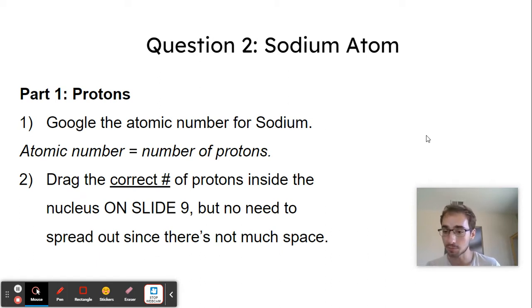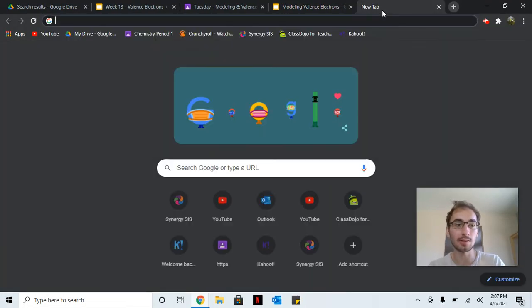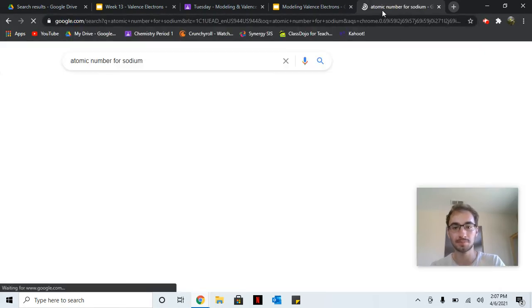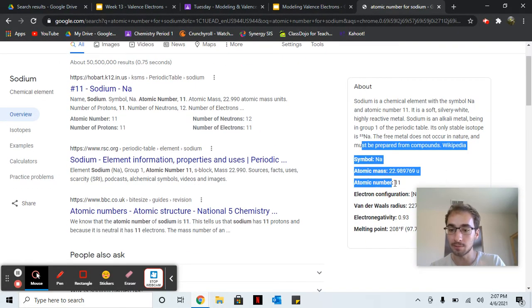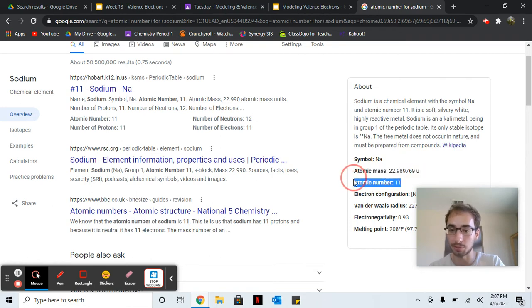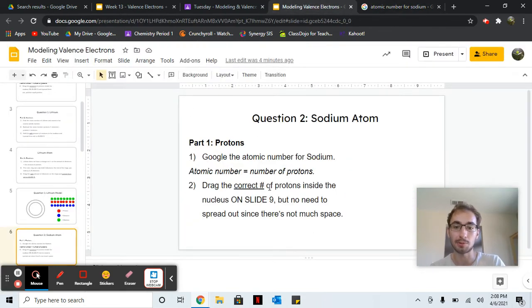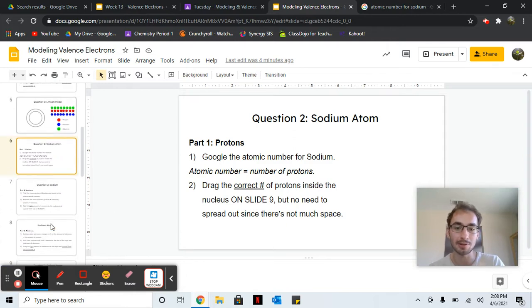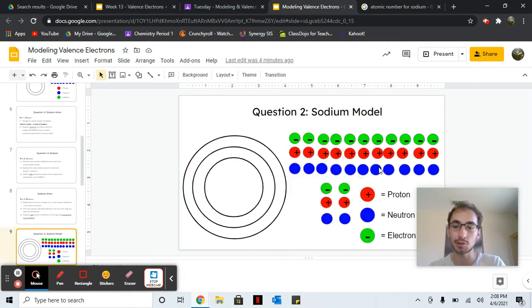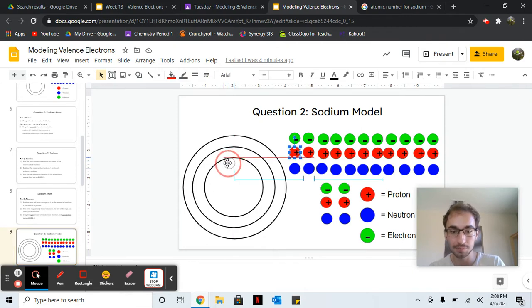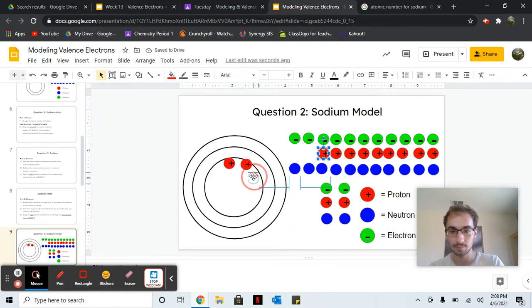Next, sodium. This one will need more help. Start with Googling the atomic number for sodium. Sodium is element number 11, which means it has 11 protons. Drag the correct number of protons inside the nucleus, but no need to spread them out since there's not much space. You can try if you want, but you don't have to. I'm going to do my best to spread them out, kind of like a clock.